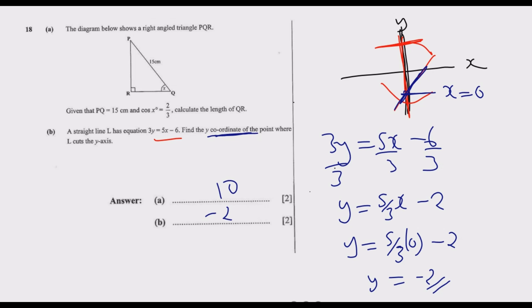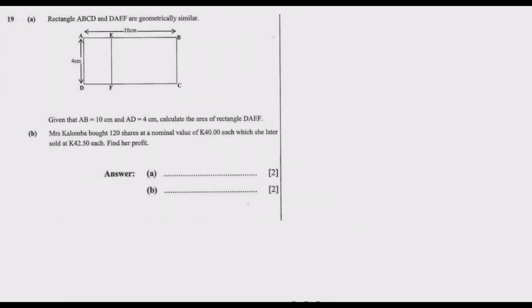Let's move to question 19. Rectangle ABCD and DAEF are geometrically similar. Given that AB equals 10 centimeters and AD equals 4 centimeters, calculate the area of rectangle DAEF. We have a smaller rectangle with side A, D, E, F. The longer side of the smaller one is 4 centimeters. We need to find this side x.